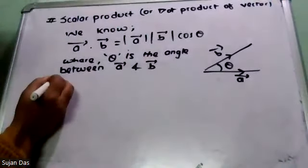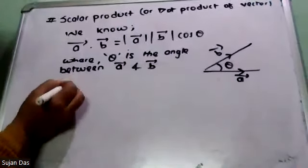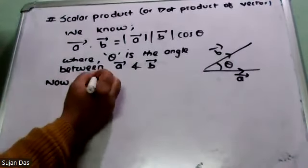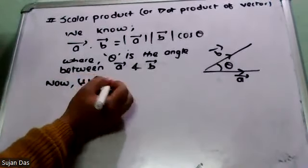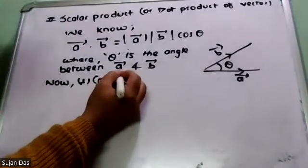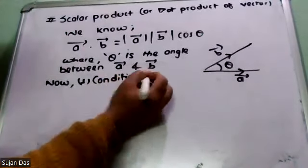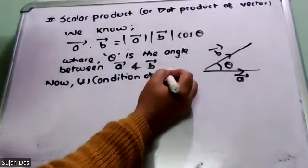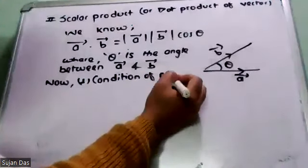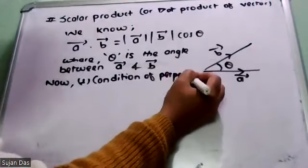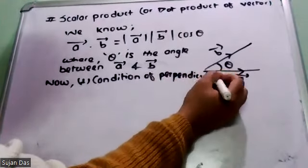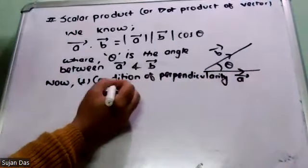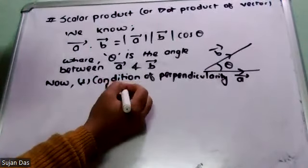Now, first we are doing the condition of perpendicularity, which is also called orthogonal.